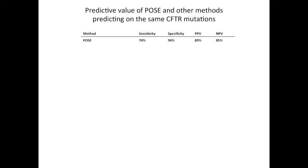positive predictive value, and negative predictive value. Taking these numbers together, you can see that we do a pretty good job at accurately calling the true positives, and an excellent job at accurately classifying the true negatives. Next we wanted to compare our method to existing methods predicting on these same test set mutations. For SIFT, we see a really high sensitivity but a much lower specificity for this particular system.